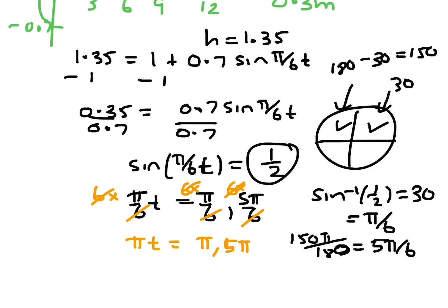And I'll end up with πt equals π and 5π. And then if we divide everything by π, I end up with t equals 1 and 5. So it's after 1 second and 5 seconds.